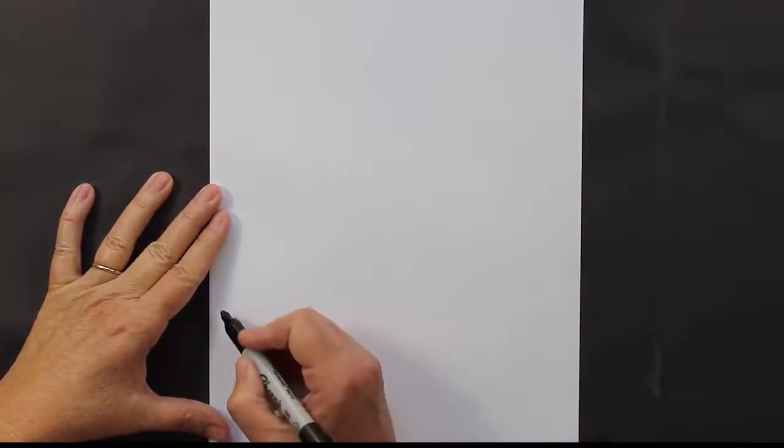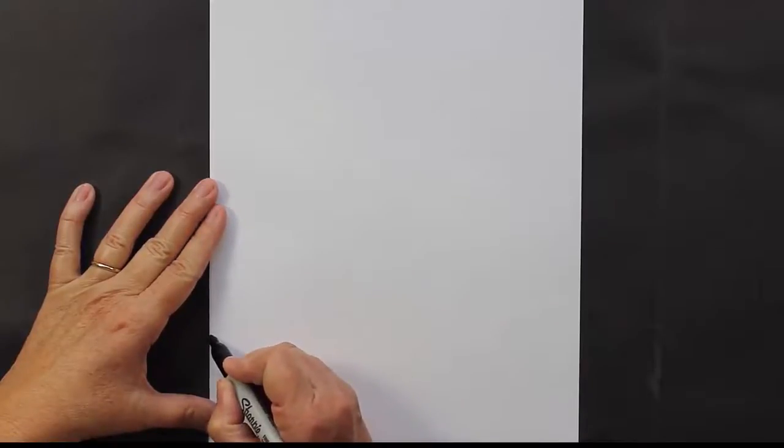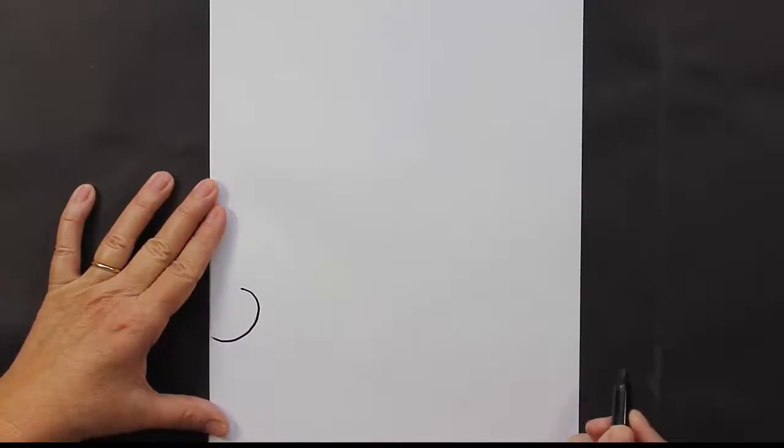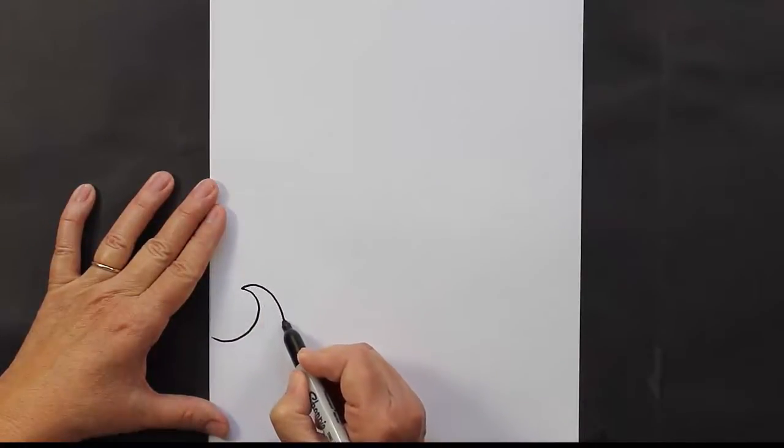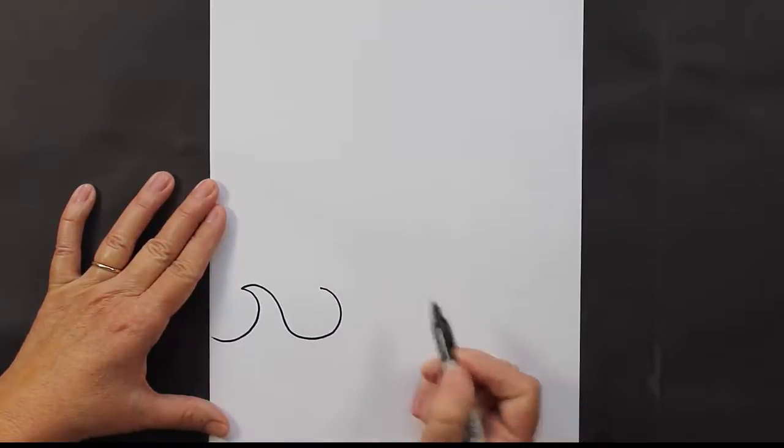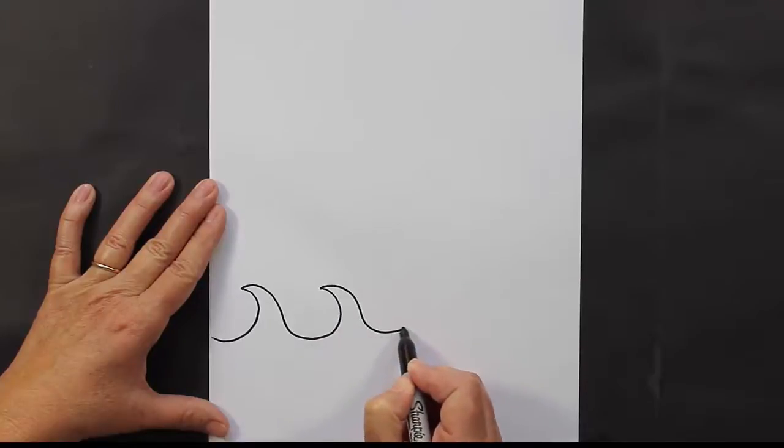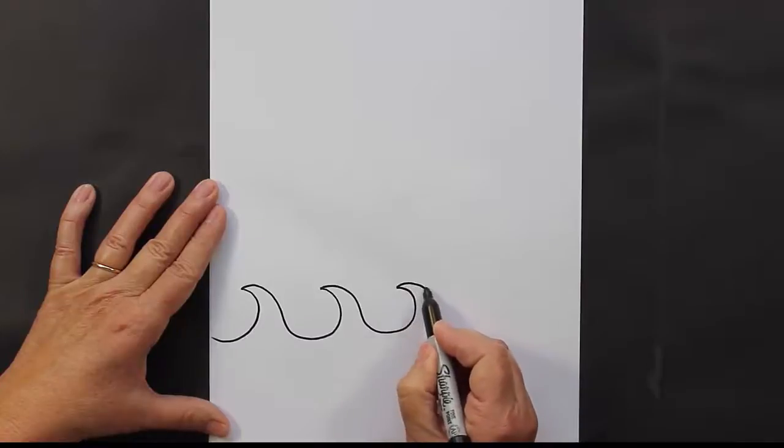We're going to first make some waves because this little guy is going to be popping out of the waves. So this is how you make a wave. You make a curved line like this and then you make another curved line that comes down and then you repeat this pattern. It is kind of tricky so you might want to practice this a little bit before you start your final drawing.